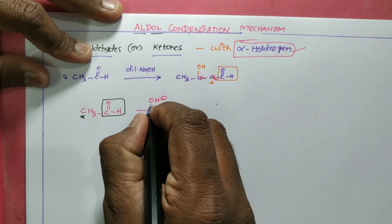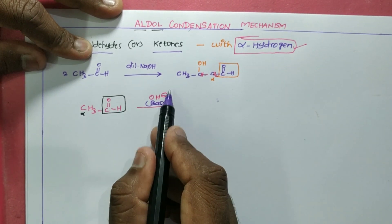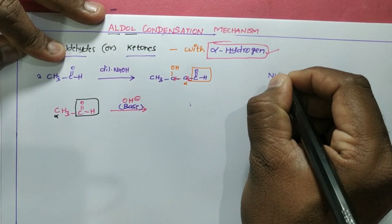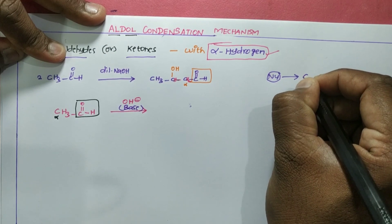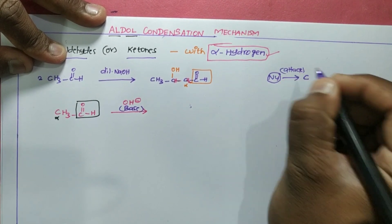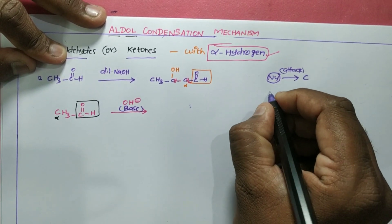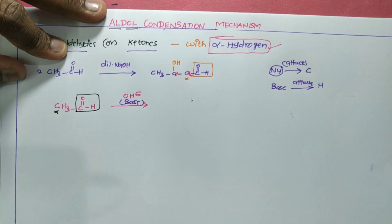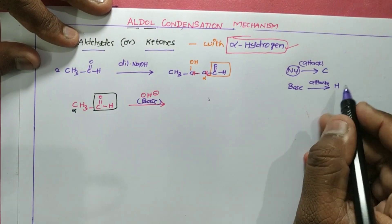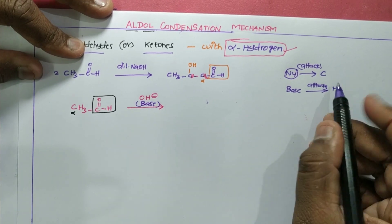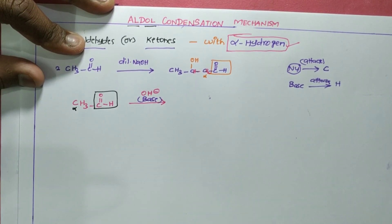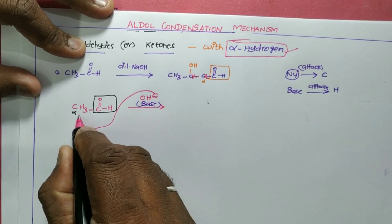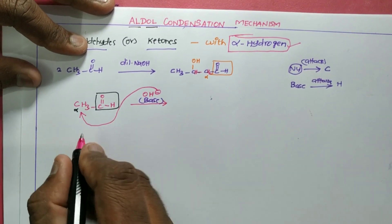The reactant here is a base — dilute NaOH. As you know in organic chemistry, a nucleophile always attacks carbon, while a base always attacks hydrogen. We need to determine whether a nucleophilic substitution or elimination reaction will take place. The base will always attack the hydrogen present on the alpha carbon — the alpha hydrogen.